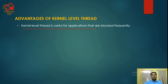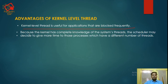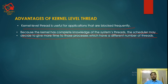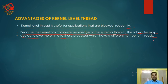Kernel-level threads are useful for applications that are blocked frequently. Because the kernel has complete knowledge of the system's threads, the scheduler may decide to give more time to those processes which have a larger number of threads. So in kernel-level threads, it can be shown which process has how many threads, and those processes with more threads are given more time for execution.